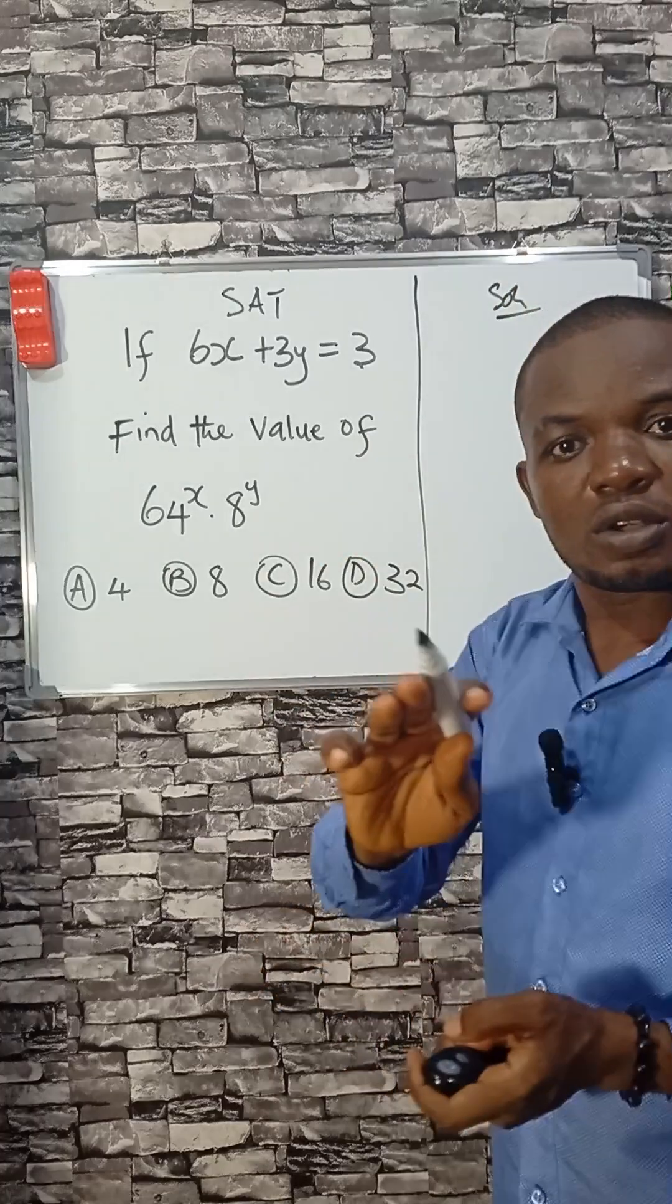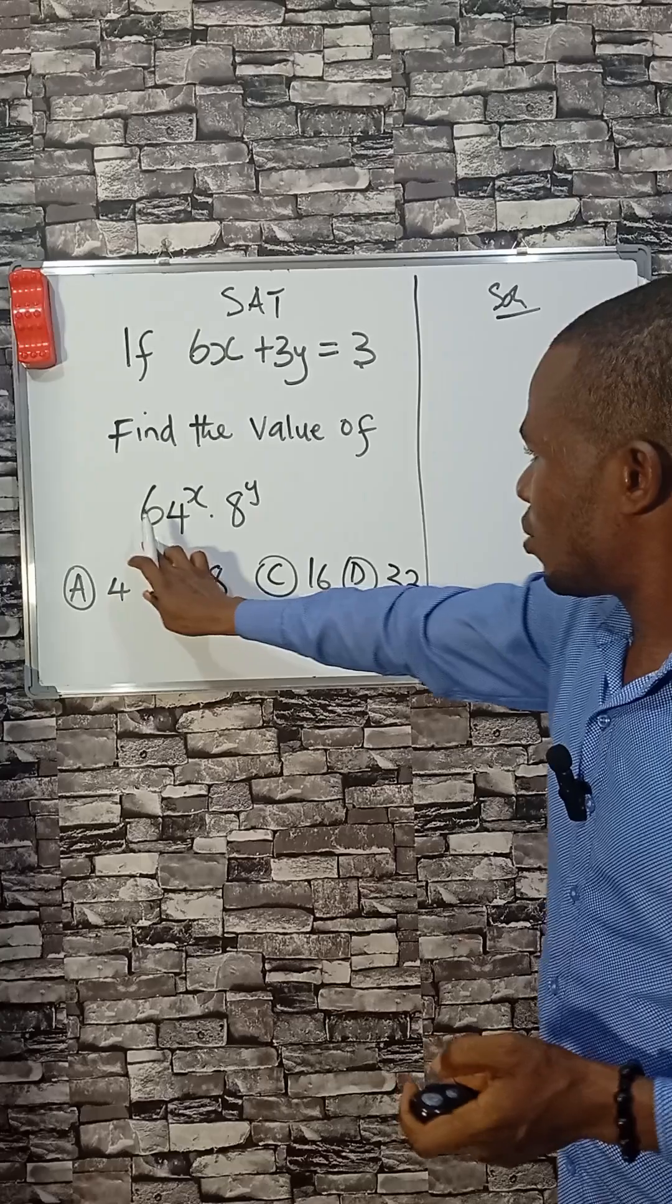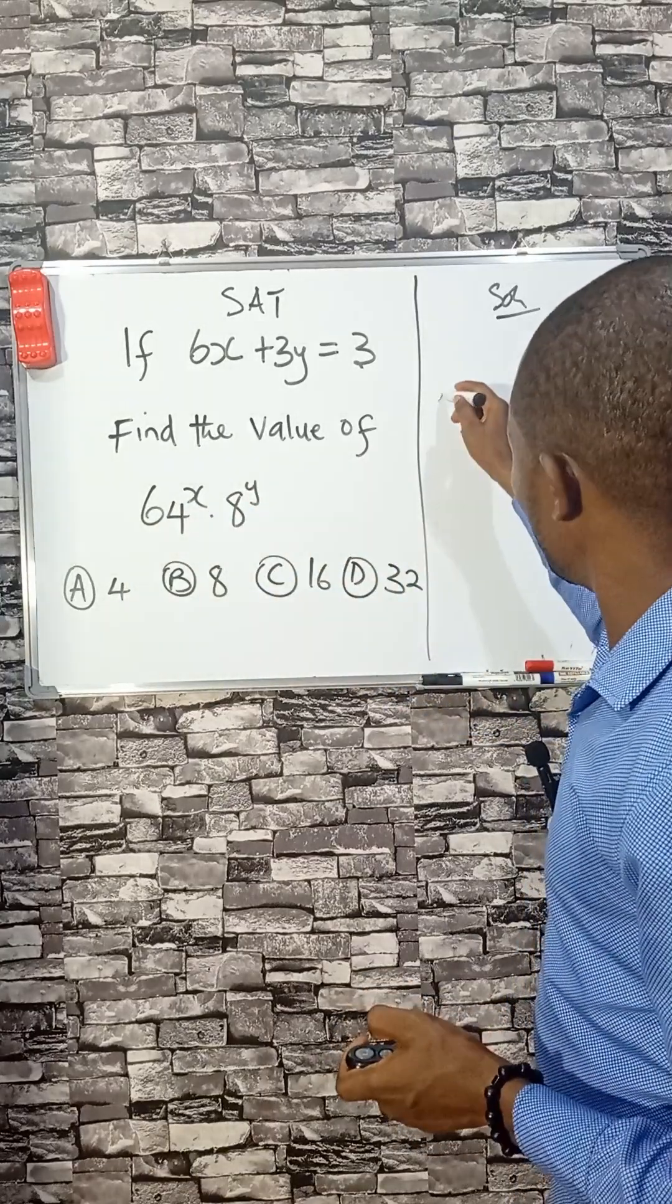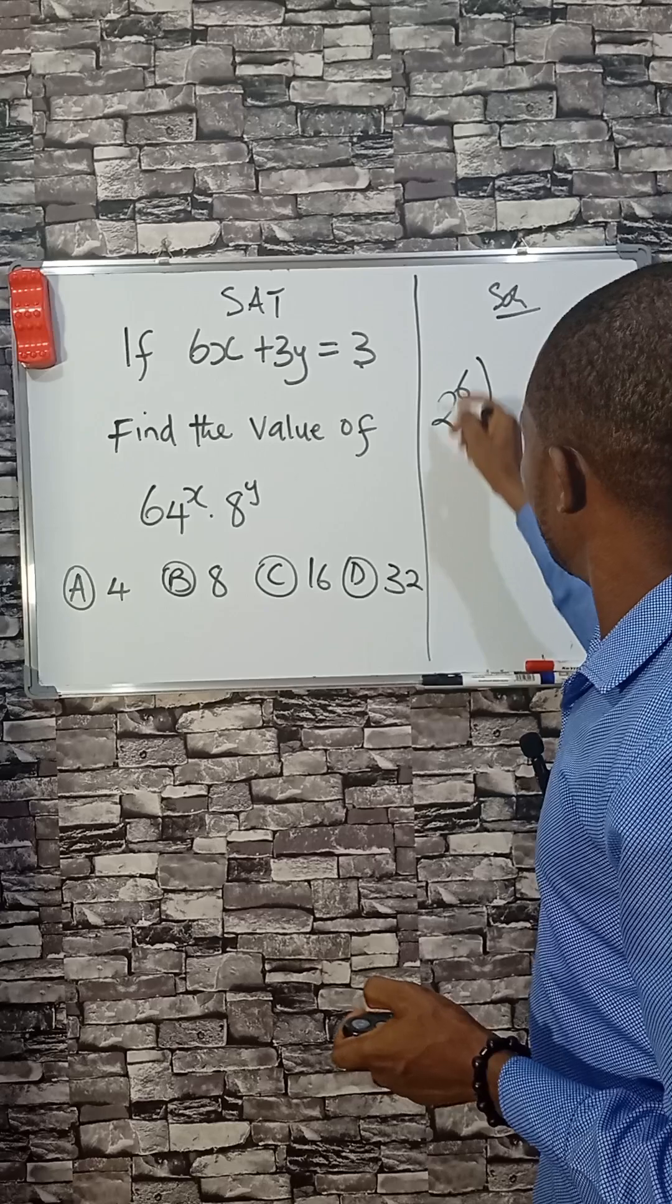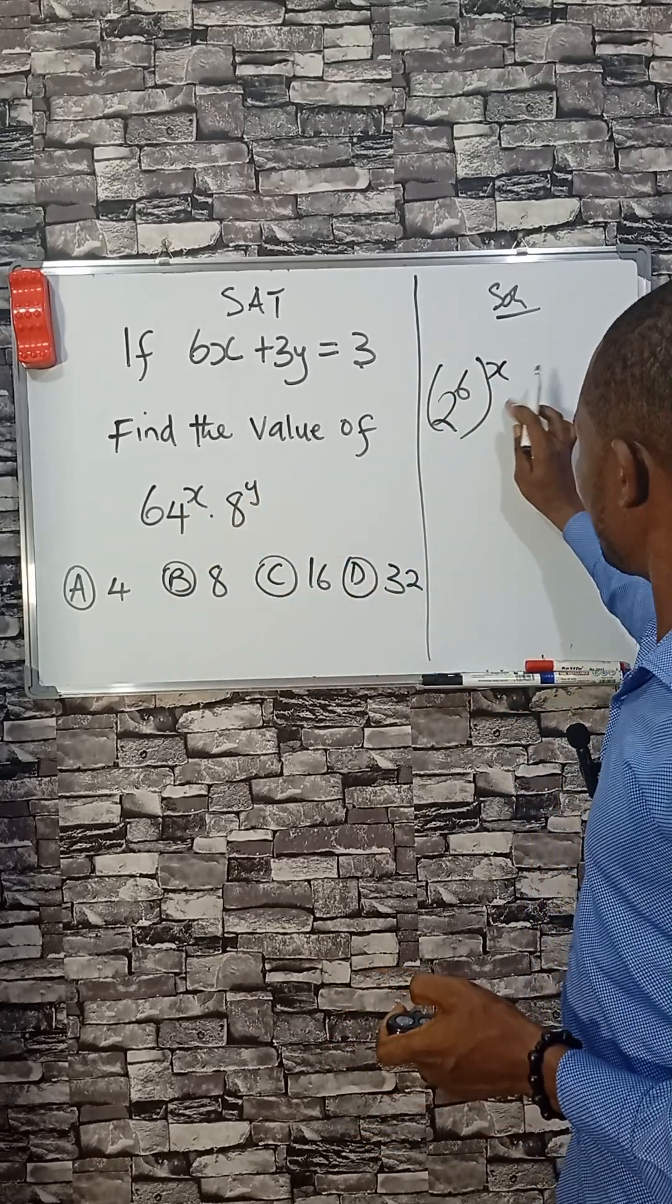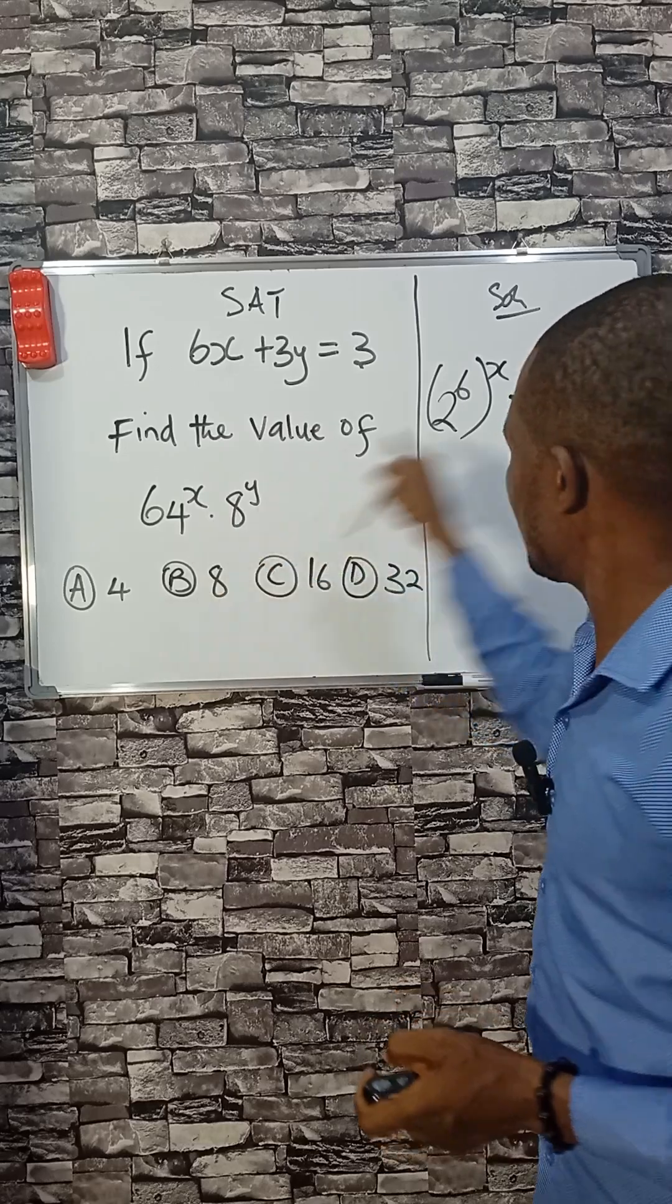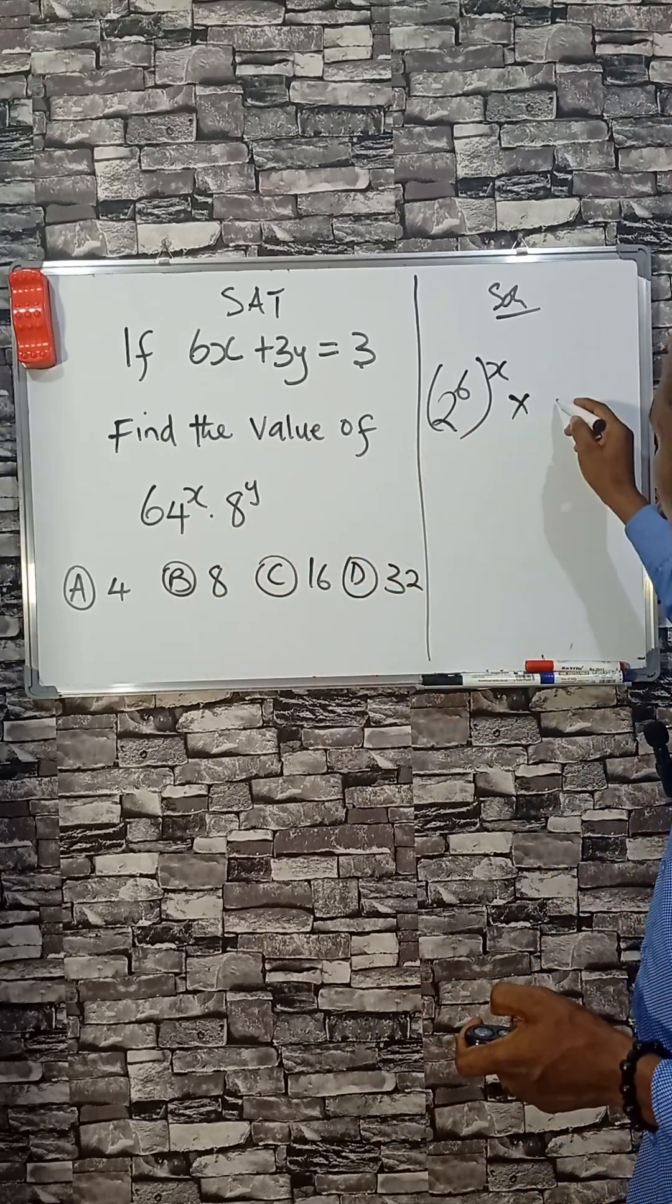Now, what we can do is write 64 as 2 to the power 6, then to the power x. This dot here means multiplication. And 8 can be written as 2...